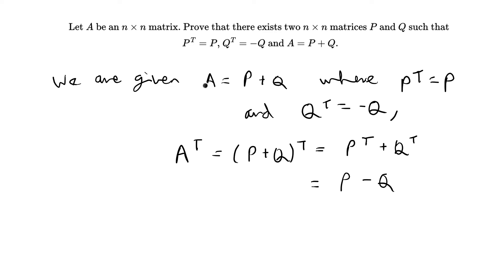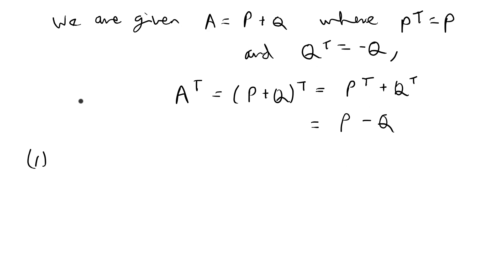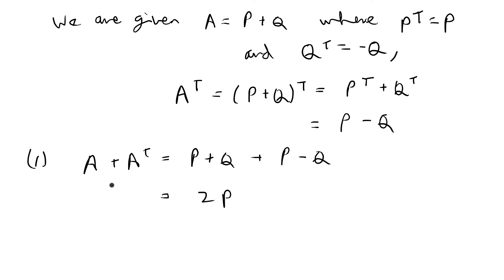If we add A and A transpose, the Q terms cancel — positive Q and negative Q give zero — and we're left with 2P. So A plus Aᵀ equals P plus Q plus P minus Q, which gives 2P. Therefore P equals one-half times A plus A transpose.